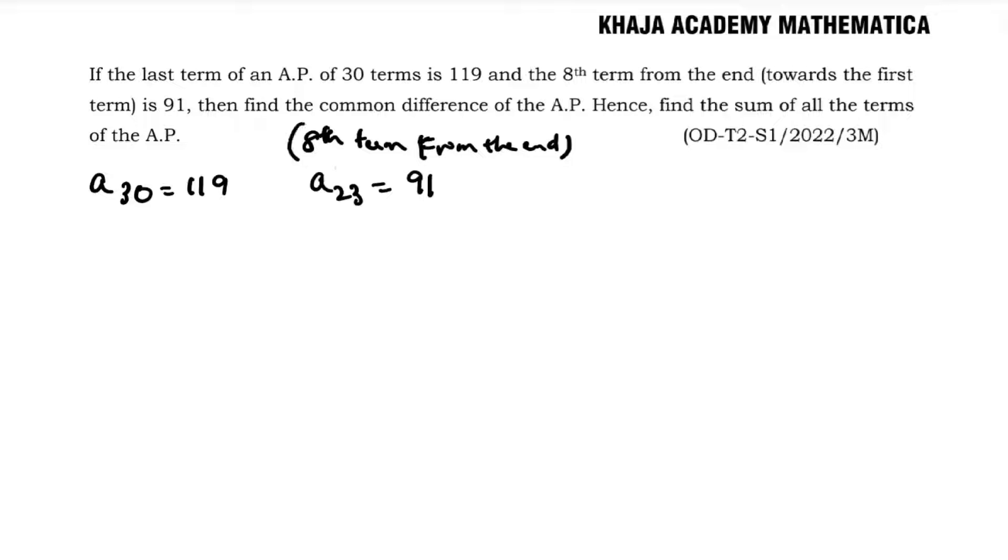Now I'll use the formula an = a + (n-1)d. So a30 is a + 29d, which equals 119. So a + 29d = 119.